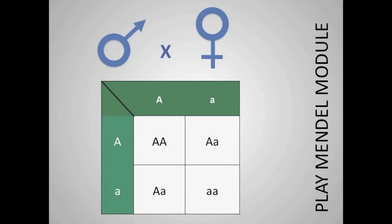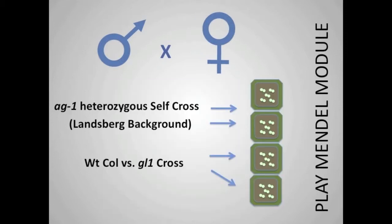This module has been designed to teach you Mendelian genetics and heredity by having you cross plants of different genotypes. Specifically, you will be analyzing a previously performed cross between AG1 heterozygous mutants and comparing those to wild-type Landsberg plants.